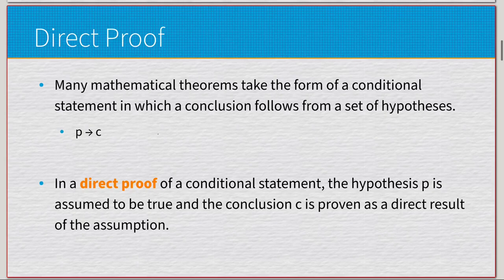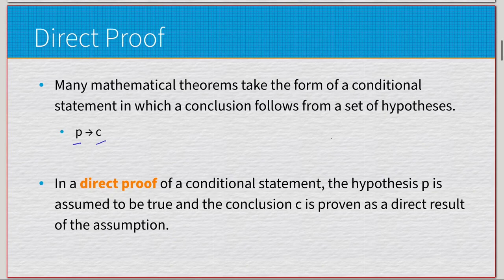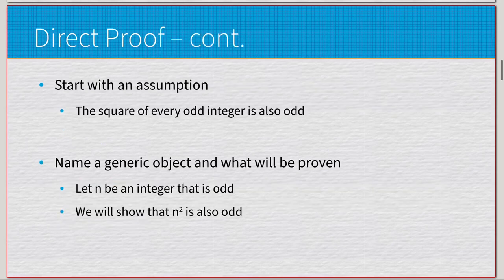Many mathematical theorems take the form of a conditional statement in which a conclusion follows from a set of hypotheses. We have hypothesis P implies conclusion C — it's very direct, hence the name direct proof. The hypothesis P is assumed to be true and the conclusion C is proven as a direct result of the assumption.